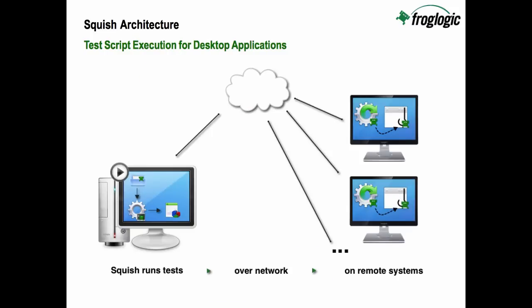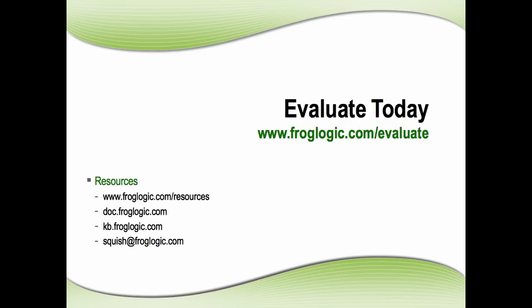When executing tests, it's a one-to-many relationship. Still from the IDE, or whether using the command line interface or one of our integrations, the test scripts will be taken in by the Squish runner, which connects again over TCP/IP, local or remote, to one or more listening Squish server services, which then launch the application, execute the tests, and return the results back to the Squish runner, which then outputs those results. Download an evaluation at froglogic.com/evaluate and see our other resources at froglogic.com/resources. Thank you for watching.